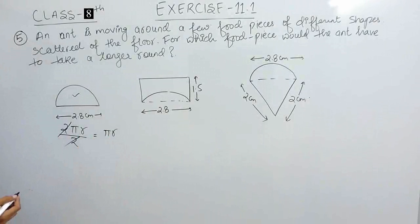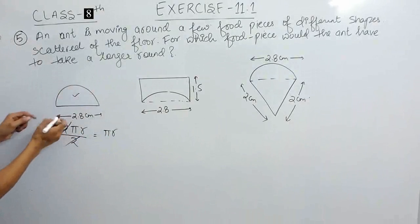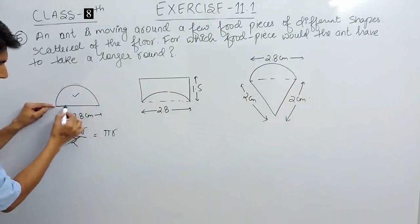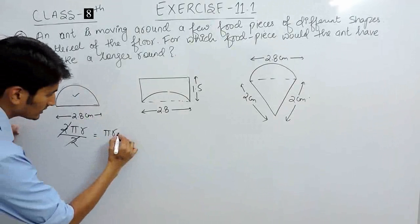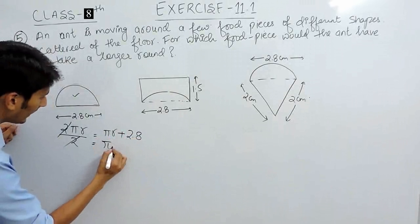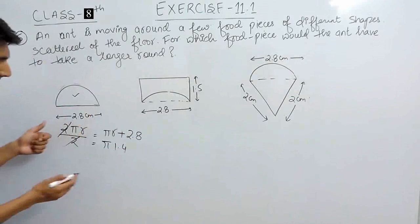So, the semicircle semi-circumference is πr, and this perimeter for this figure is semicircle plus this which is 2.8. So this is π and r here is 1.4 because if the diameter is 2.8,